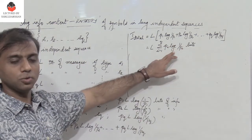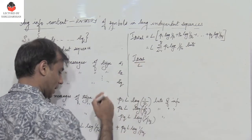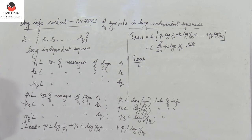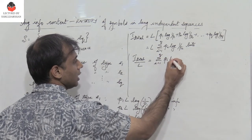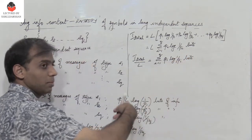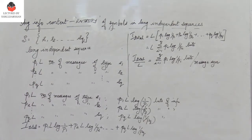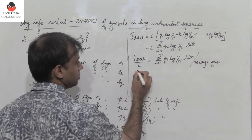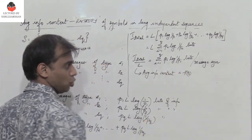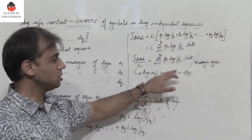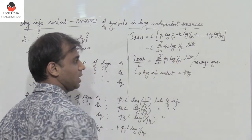Here I use log base 2 to get the value in bits. Dividing the total self-information by the length L gives I_total / L = Σ(i=1 to Q) Pi·log₂(1/Pi) bits per message symbol. This is referred to as the average information content, also called H(S), which is entropy. So the expression of entropy is H(S) = Σ(i=1 to Q) Pi·log₂(1/Pi) bits per message symbol.